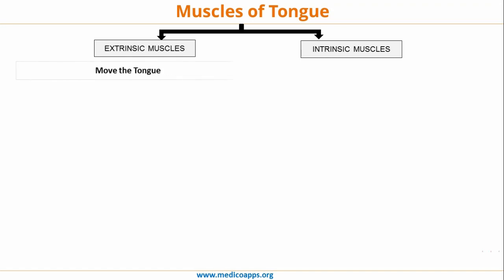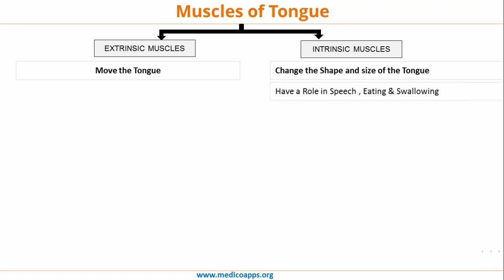The extrinsic group of muscles help to move the tongue, whereas the intrinsic group of muscles change the shape and the size of the tongue, so they have a role in speech, eating and swallowing.